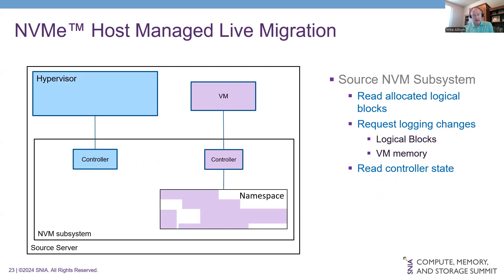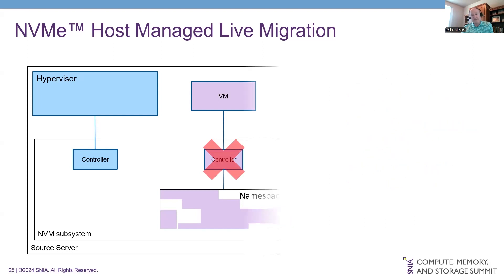Finally, now that we've gotten the controller state, we need to be able to pause the controller. We're adding a pause command that the hypervisor sends, targeting the controller on the VM being migrated. Pausing causes that controller to stop fetching commands, while any command that has already been fetched is processed to completion. After those completions, the controller is no longer making any state changes or namespace changes. Those are the services on the source side.